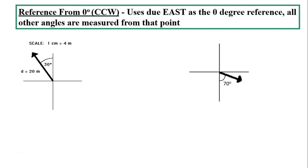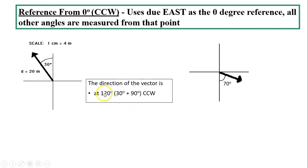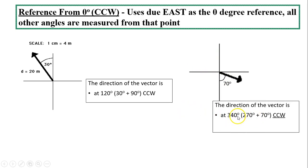Another way to indicate the direction of a vector is the counterclockwise method. Due east is used as the zero-degree reference, and all angles are measured counterclockwise from that point. For the same vector, instead of using compass point, the direction is 120 degrees counterclockwise — calculated as 90 plus 30 equals 120 degrees, counting from east. For the second example, the counterclockwise direction is 340 degrees — that is 270 plus 70 degrees counterclockwise from east.